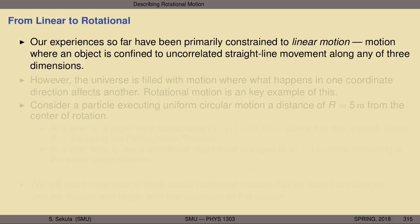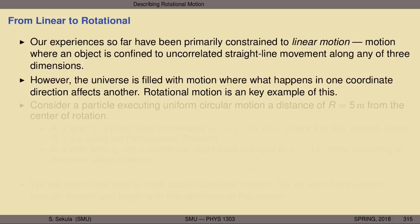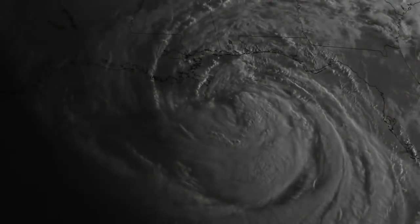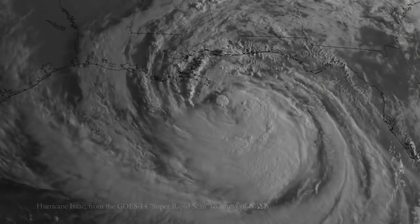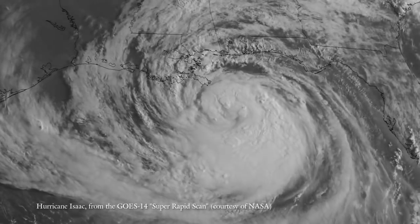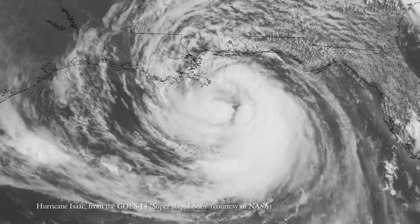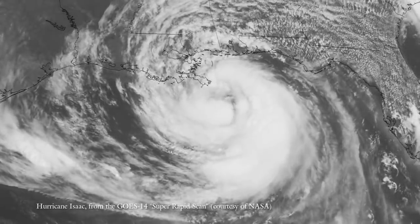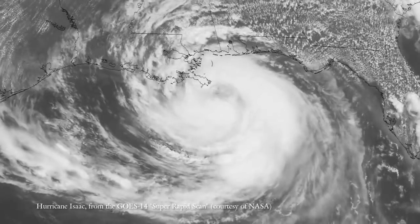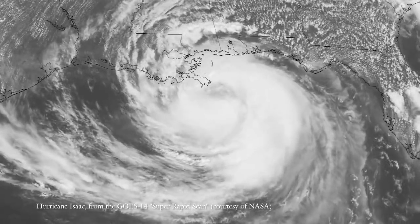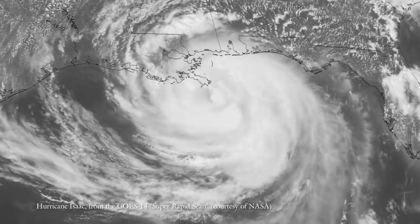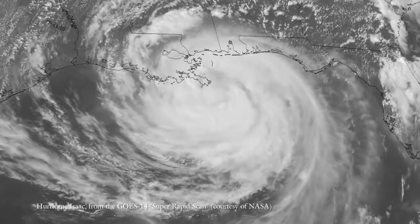The problem is that the universe is absolutely filled with motion where what happens in one coordinate direction constrains the motion in the other and vice versa. Rotational motion generically — not just uniform circular motion, but other kinds of rotational motion — is a key example of exactly this phenomenon.